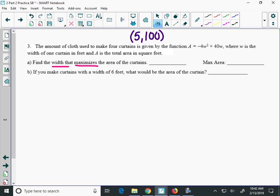So when I look at the ordered pair 5, 100, the letter acting like the X here is the width, the W. So that's the width that maximizes the area. So 5 feet. The area, A, is acting like your Y. So that 100 is the square footage that would be the maximum area of your curtains.